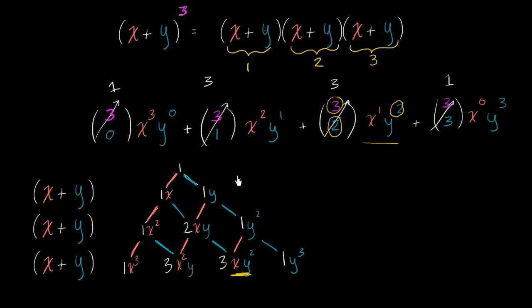And just to make the connection between what we just said, what's really going on here is at each of these nodes, as we pick a path, we're essentially saying, are we picking an x or y from each of these expressions? So we number the expressions. Let's number them here. So let's say this is expression one. This is expression two. This is expression three.